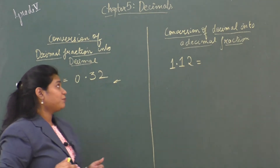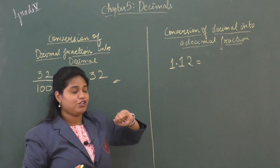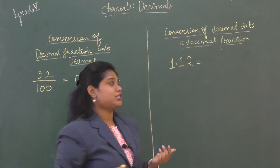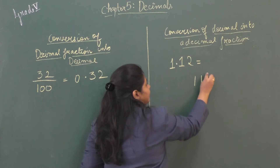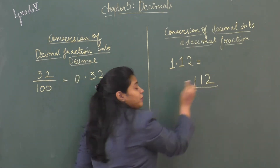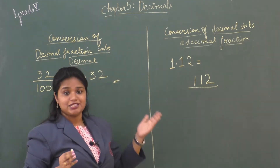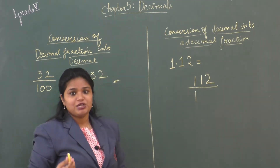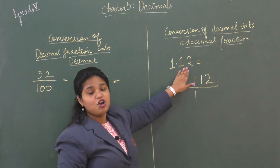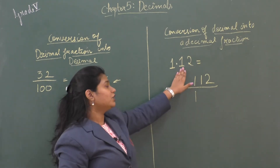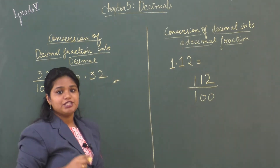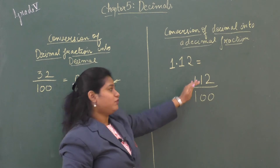Now let's look at conversion of a decimal number into a decimal fraction. We have 1.12. First write the number ignoring the decimal point: 112. For the denominator, since it is a decimal fraction it starts with 1, and we add zeros equal to the number of decimal places. Here there are two decimal places (1 and 2), so we put two zeros: the denominator is 100. Therefore, 1.12 as a decimal fraction is 112/100.